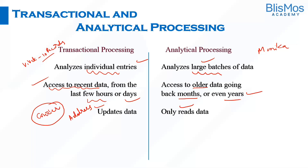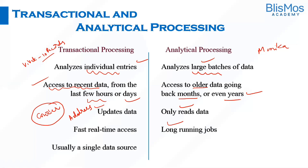In transactional processing there is real-time access. In analytical processing we have long-running jobs because the amount of data being handled is much larger. Transactional processing usually has a single data source, whereas analytical processing involves multiple data sources — for example, Monica had to check data from previous years across multiple systems.